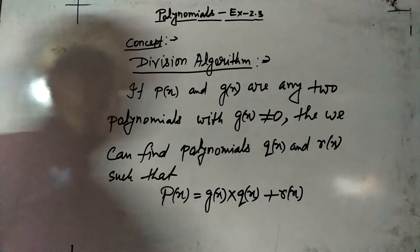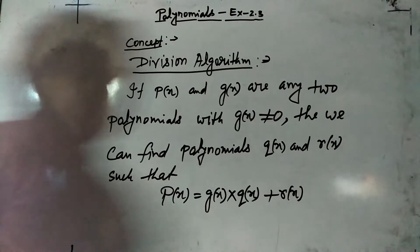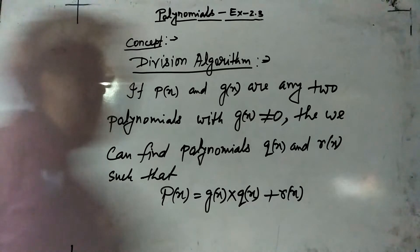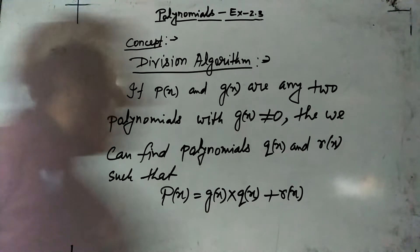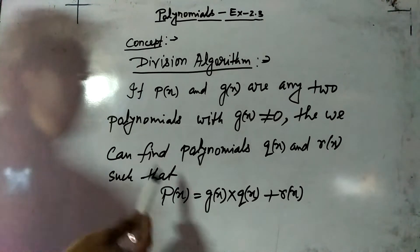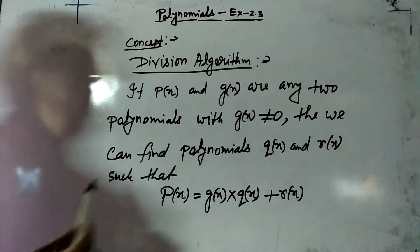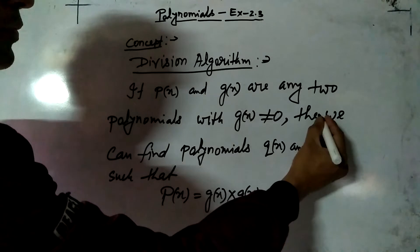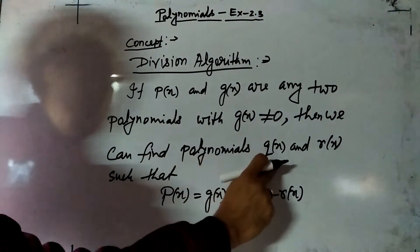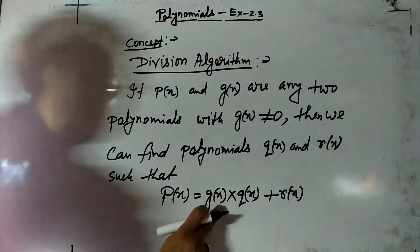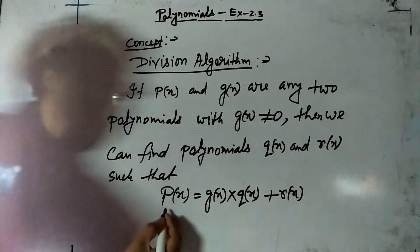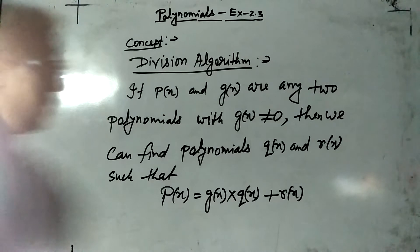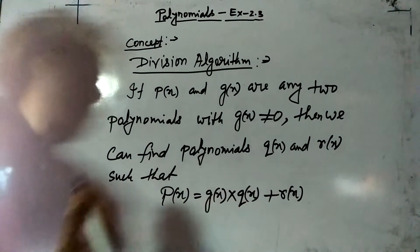Hello, my dear students. Today we are going to learn exercise 2.3 of chapter 2. The concept of this exercise is the division algorithm. If we divide P(x) by G(x), after division we will get some quotient and remainder. If P(x) and G(x) are any two polynomials with G(x) not equal to 0, then we can find polynomials Q(x) and R(x) such that P(x) = G(x) × Q(x) + R(x). That means: P(x) is dividend, G(x) is divisor, Q(x) is quotient, R(x) is remainder. So, dividend = divisor × quotient + remainder. That is the concept we are using here.